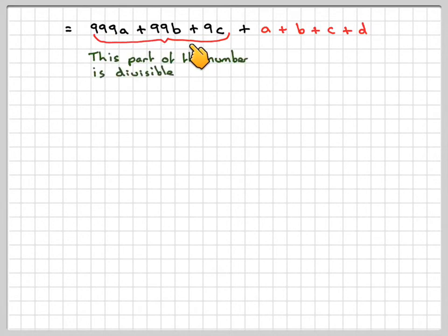Writing that out again. If we look at these, if we group these, this part will be divisible by 9 because you could take out 9, and also divisible by 3 because you could take out 3.